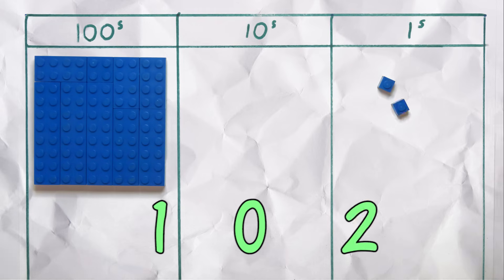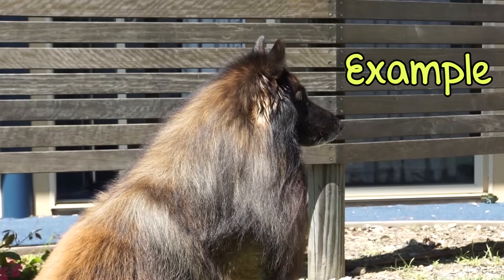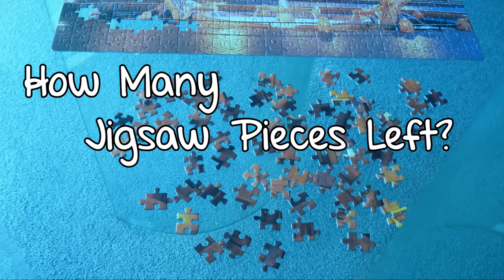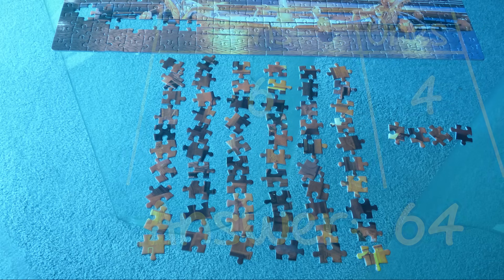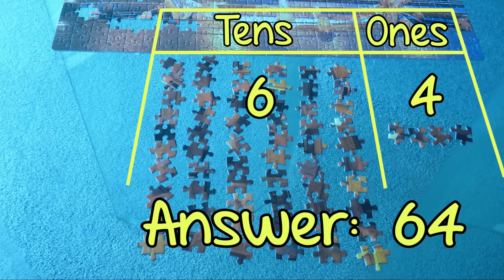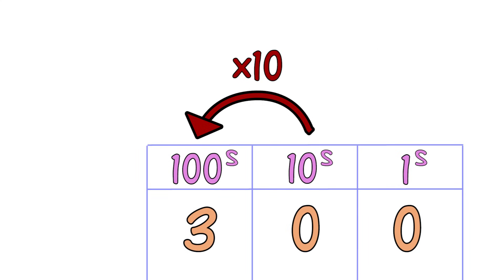Now we can continue. Each new column on the left is 10 times bigger. So where we place a digit is important.